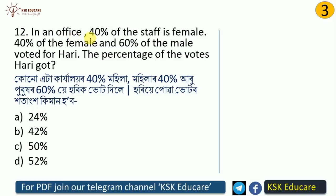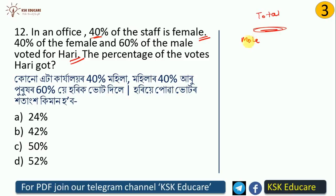In an office, 40% of the staff is female. 40% of the female and 60% of the male voted for a candidate. Suppose the total staff is 100. Since 40% are female, that means 40 are female and the remaining 60 are male.